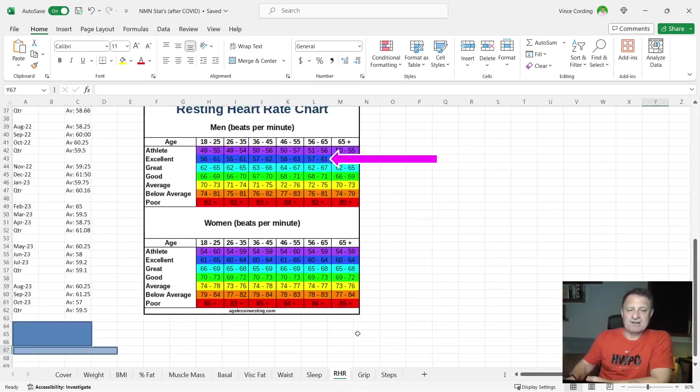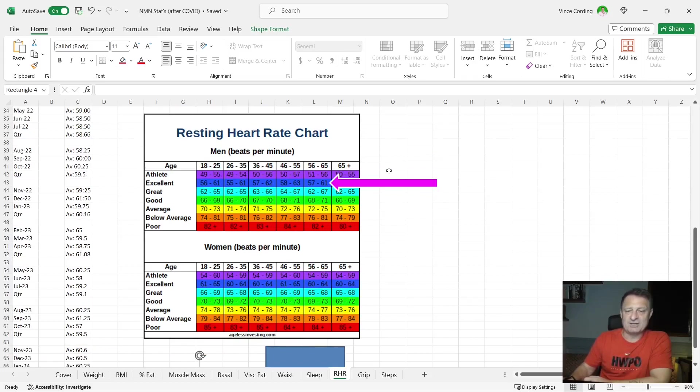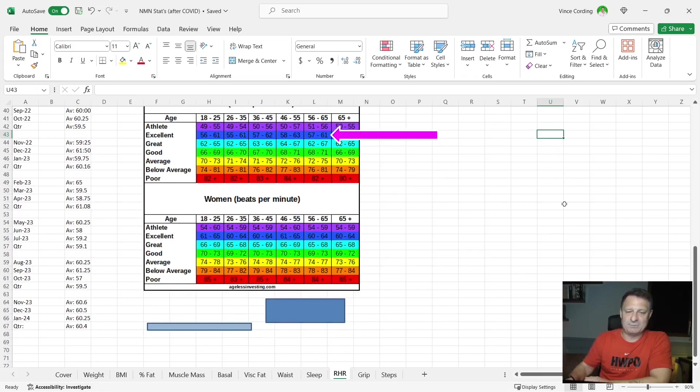Moving on to my resting heart rate. You can see here that for November, my resting heart rate was 60.6. For December, it was 60.5 and January was 60.25. That gives me for the quarter an average of 60.4. If you look at this resting heart rate chart here, you can see that someone who's between the age of 56 and 65, my average score still keeps me in the excellent range, which I'm more than happy with.